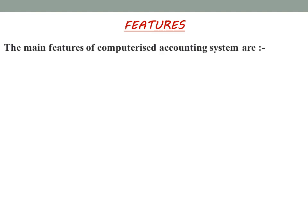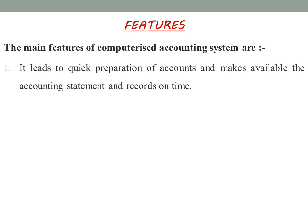Next we will move on to the main features of computerized accounting system. The first feature is that it leads to quick preparation of accounts and makes accounting statements and records available on time, such as profit and loss accounts, trading accounts, and balance sheets.